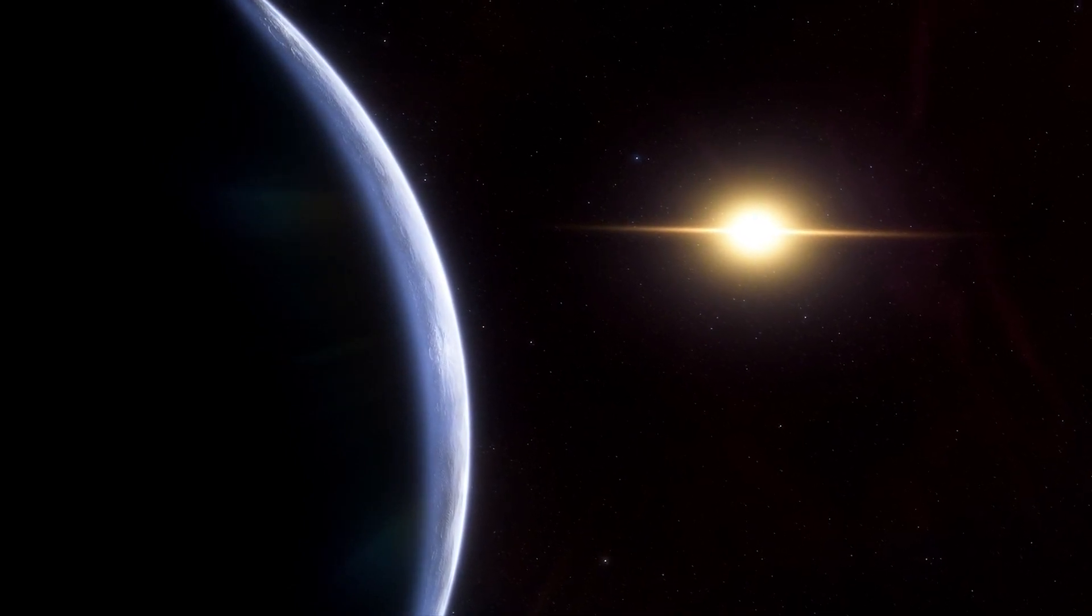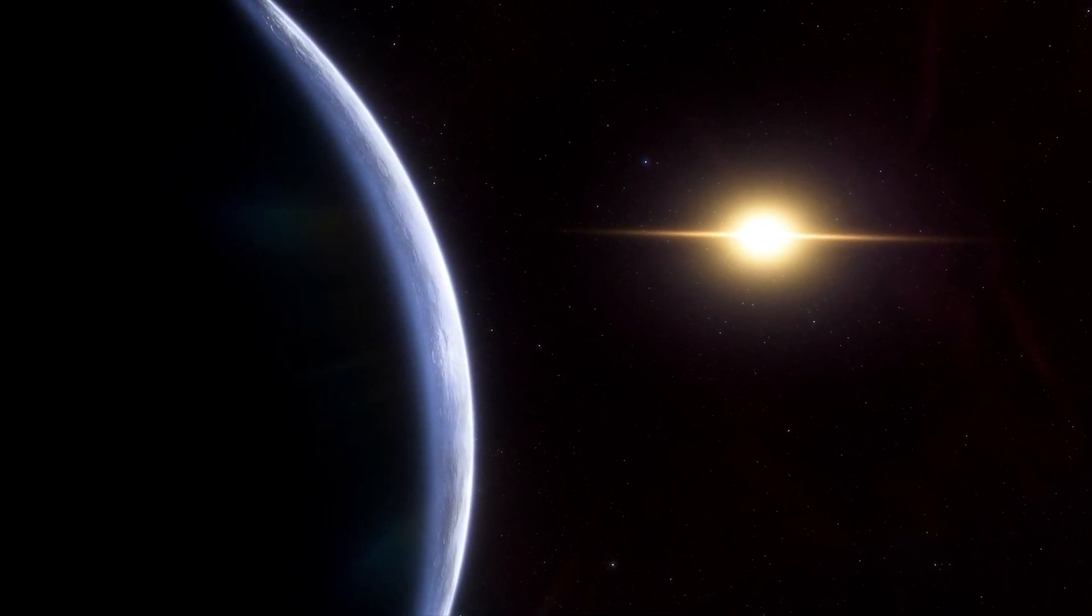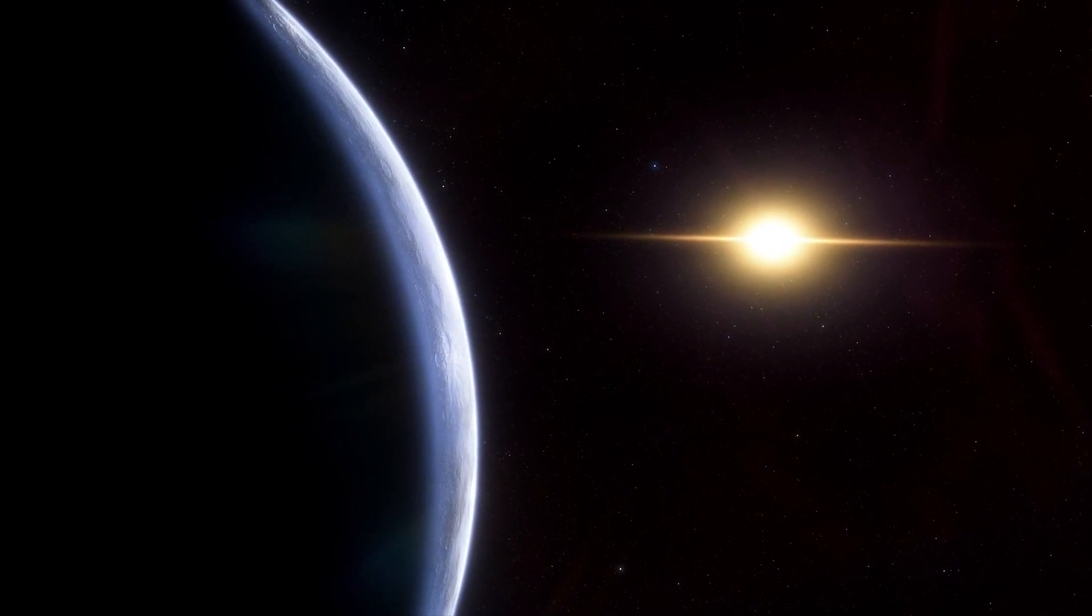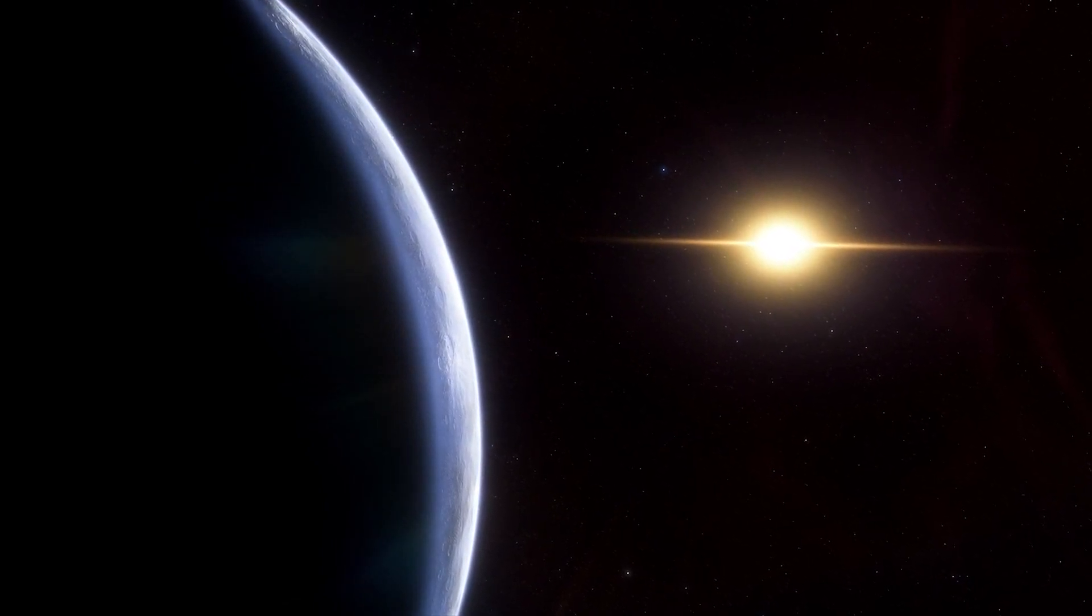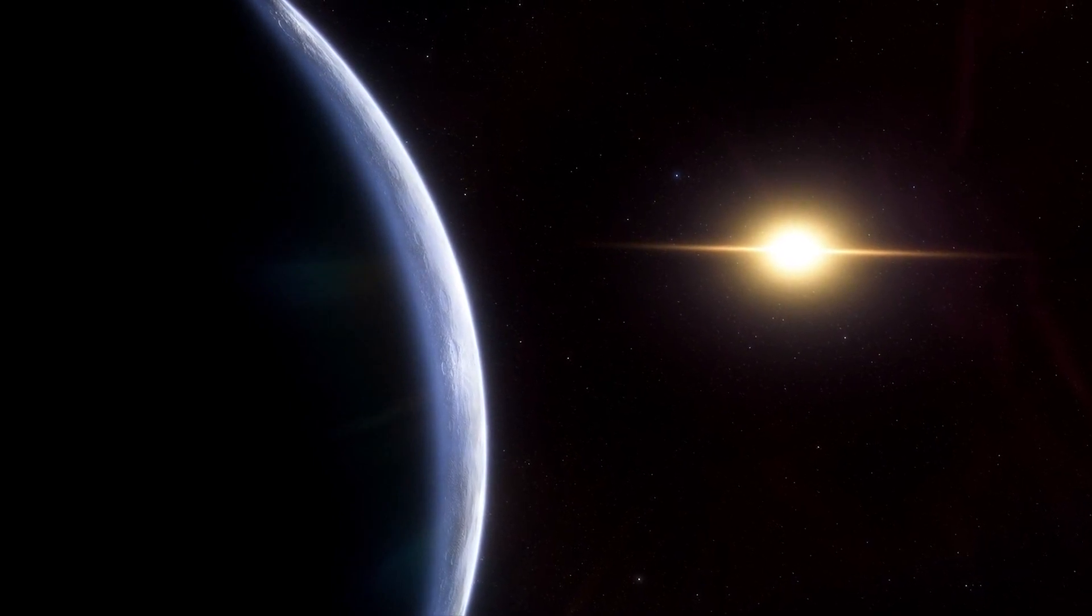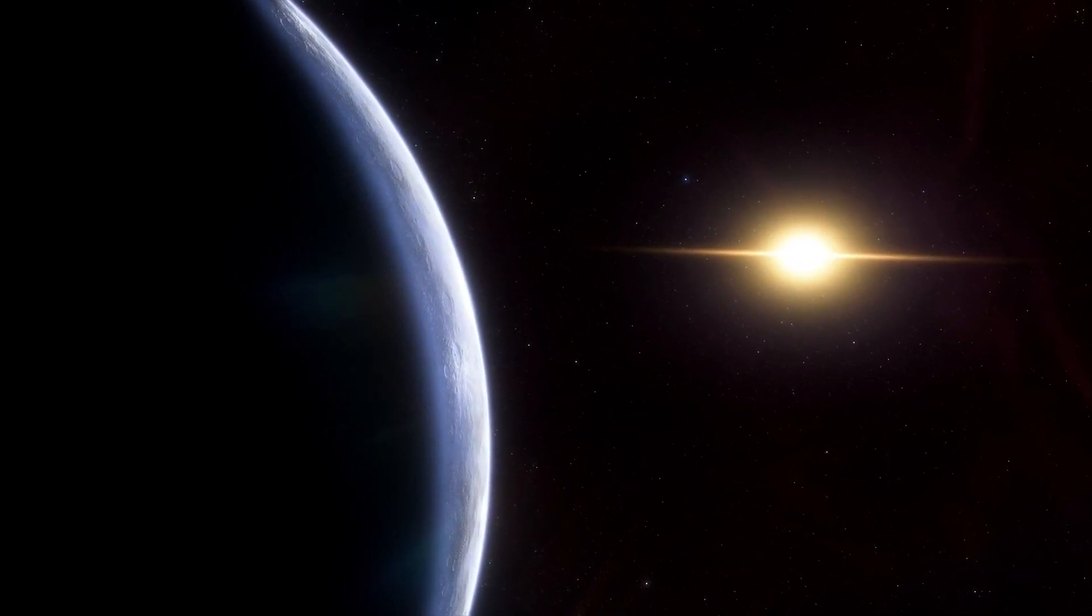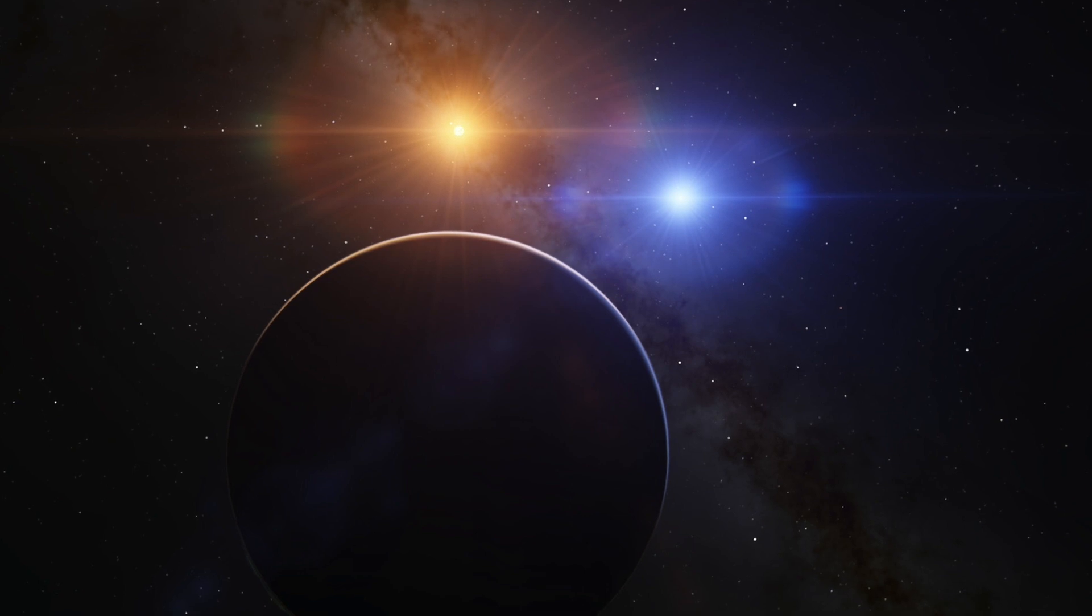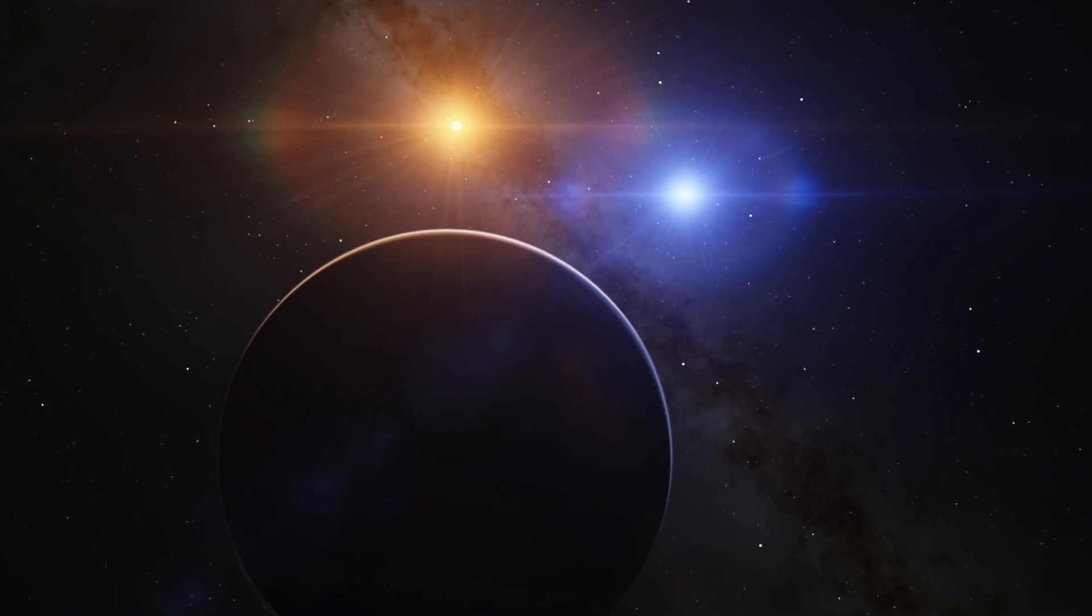We report the detection of three planet candidates: Gliese 1061 b, c and d, with periods of 3.2, 6.7 and 13 days, which is close to 1-2-4 period commensurability, the team said. The minimum masses of the three planets range from 1.4 to 1.8 Earth masses.